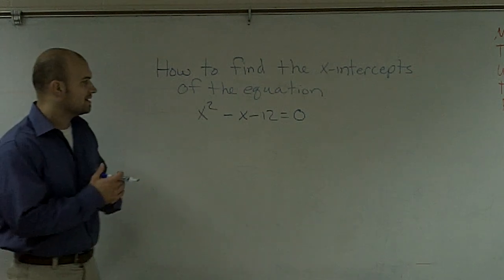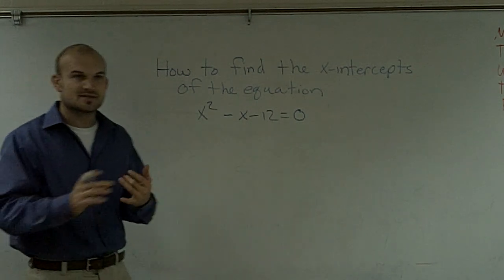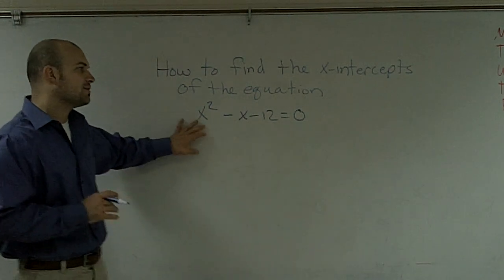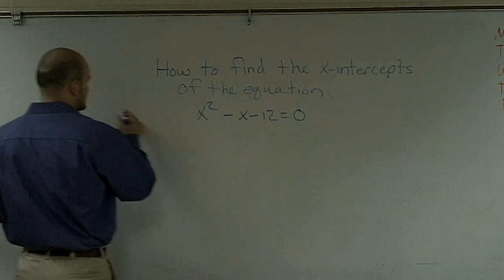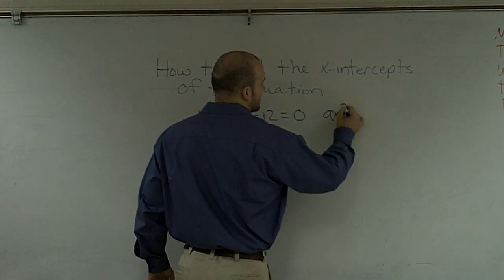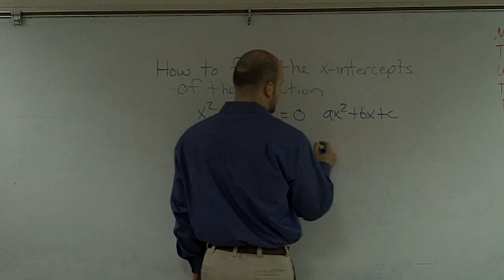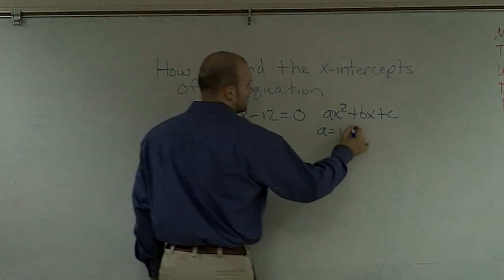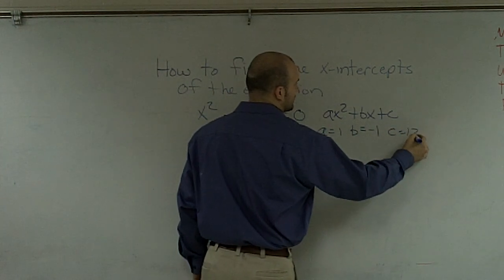The first thing I like to do is look at what a, b, or c is. Whenever we're dealing with polynomials, the main important thing is to find out the components. We need to determine — if you remember the formula ax squared plus bx plus c — so over here, a equals 1, b equals negative 1, and c equals negative 12.